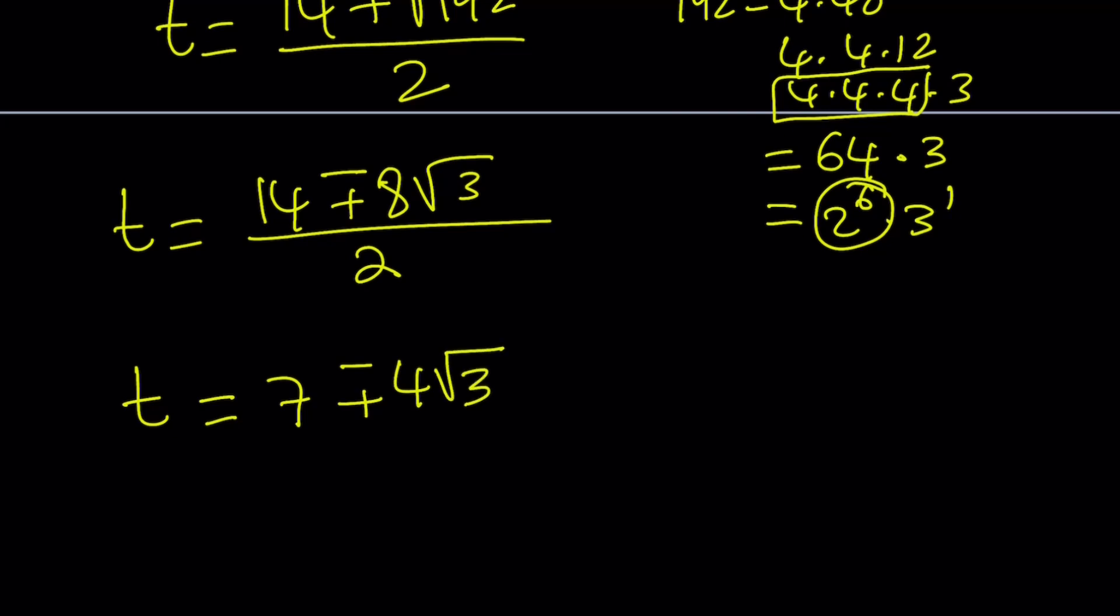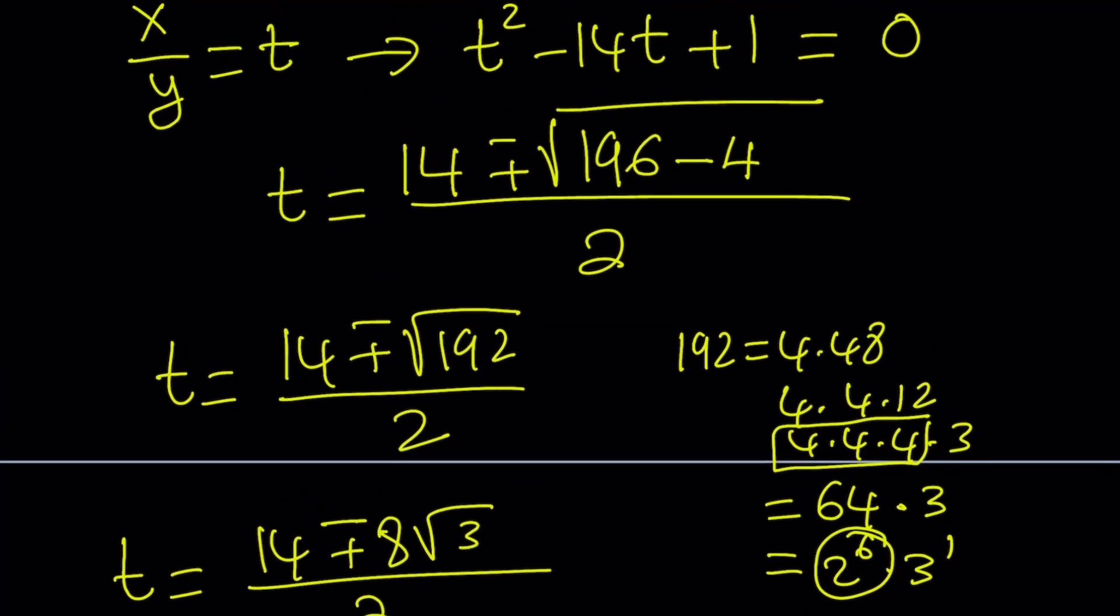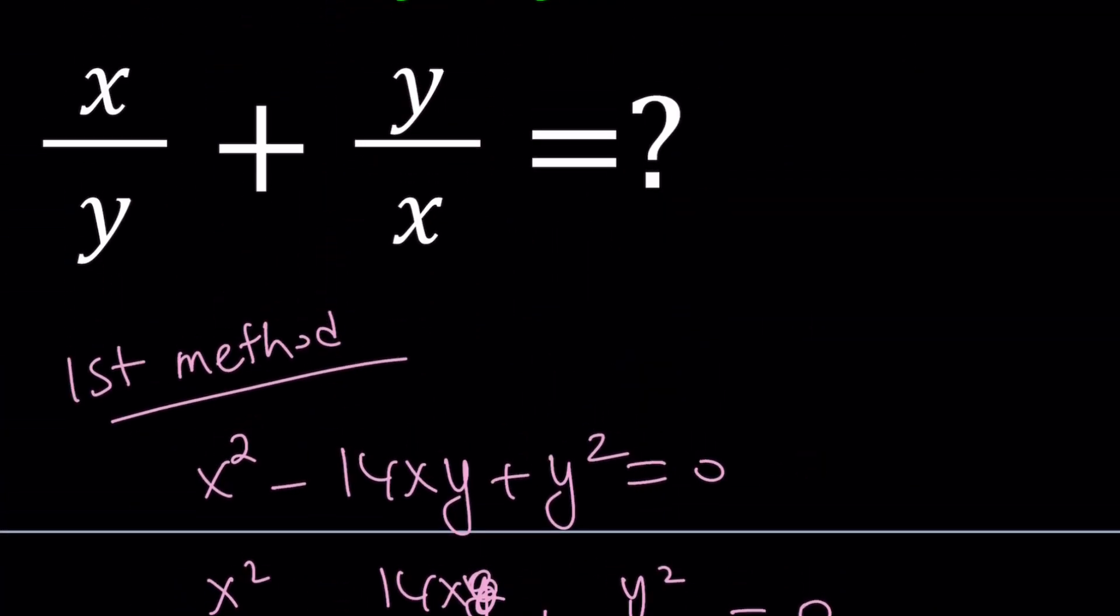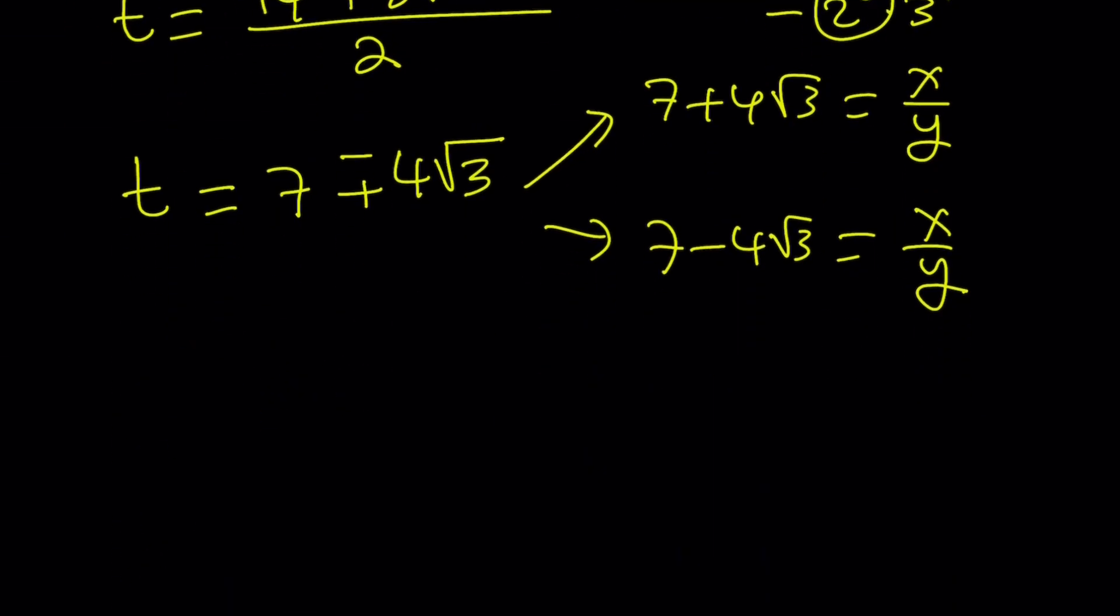And guess what? This would be the x over y values. Obviously, there are two values. 7 plus 4 root 3. That will be x over y. Or 7 minus 4 root 3. That would also be x over y. Do I need x over y? Yes. Am I supposed to find that? No. We're supposed to find this sum. And y over x is just the reciprocal of x over y, right?